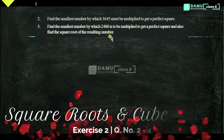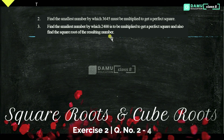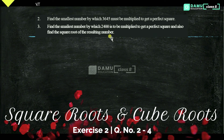So we don't know what number we have to multiply. So if you write 3,645 as squares of any digits, then we will get to know which number should be multiplied.